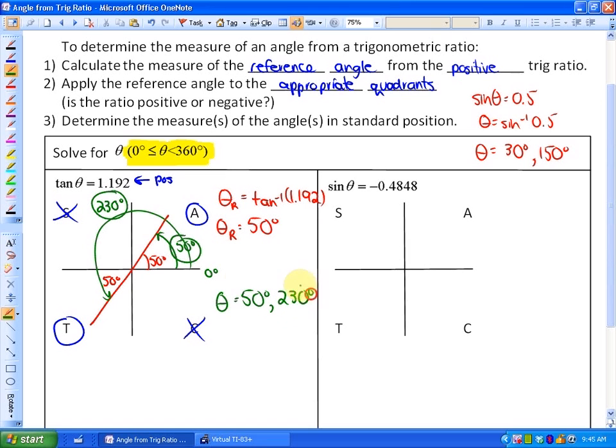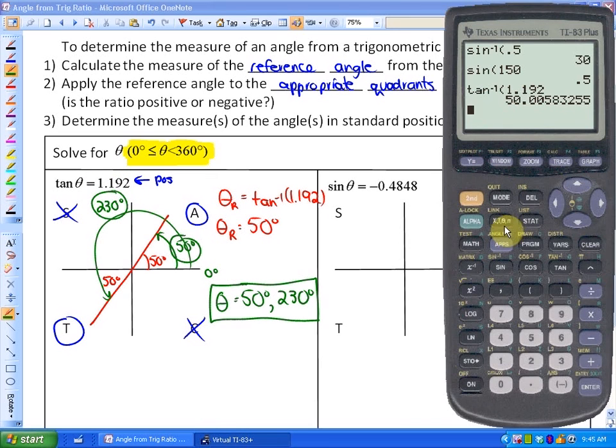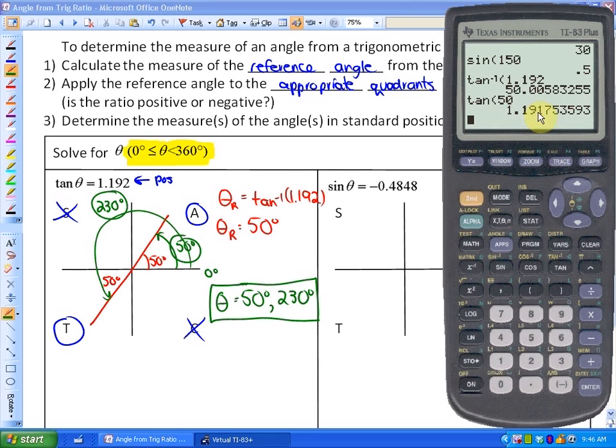Let's go ahead and check if those are correct. The way you could check it is just find out if the tan ratio of 50 and 230 is 1.192. So let's just check. Tan of 50, roughly 1.192. And tan of 230, also roughly 1.192. So there's two angles between 0 and 360 degrees that have that tan ratio.